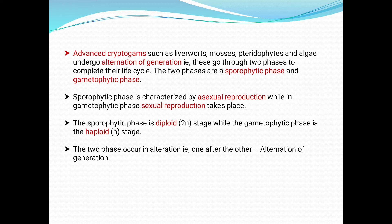The sporophytic phase is diploid — 2N in number — while the gametophytic phase is haploid — N in number. The two phases occur in alternation, that is one after the other. Hence, the alternation of generation.